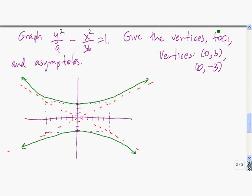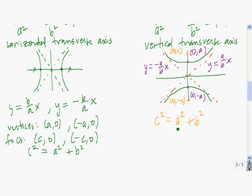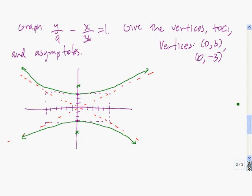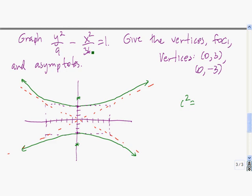We still need to find the foci and the asymptotes. The foci are going to lie somewhere along the vertical axis. The way we get the foci is by finding c squared, and c squared is the sum of a squared and b squared. So in this case, c squared equals 9 plus 36, which equals 45, meaning c is the square root of 45. Since 45 equals 9 times 5, the square root of 45 is 3 root 5.